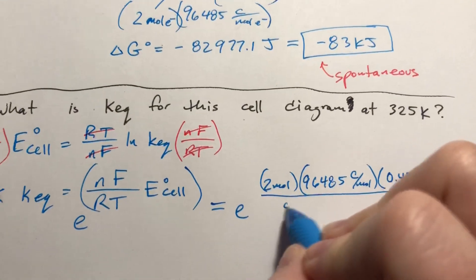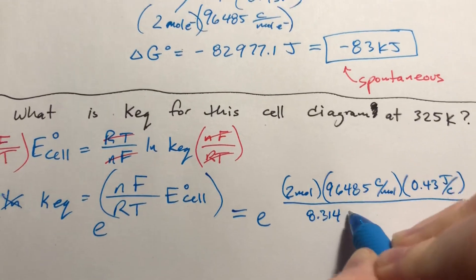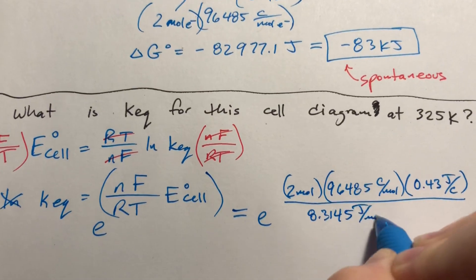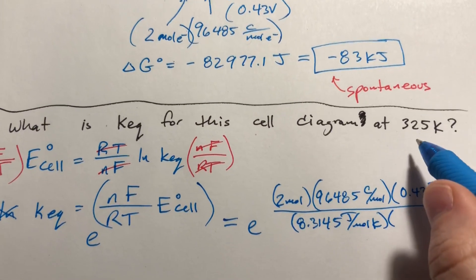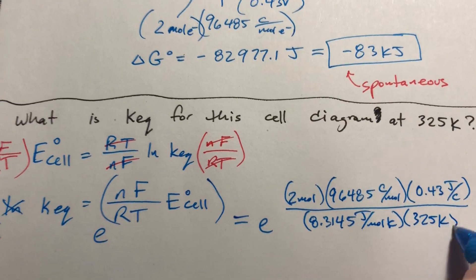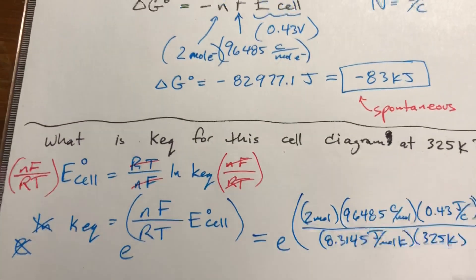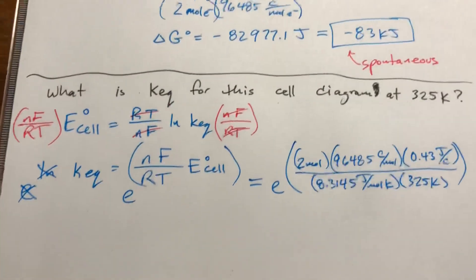R is 8.3145, it's one of the gas law constants, joules per mole Kelvin. And T, the question was asked for this at 325 Kelvin, so that's what we're going to plug in. All of that is an exponent.